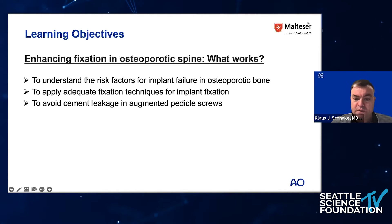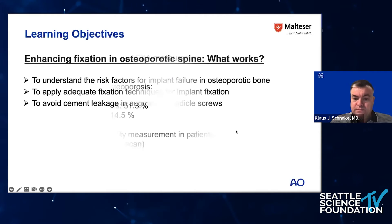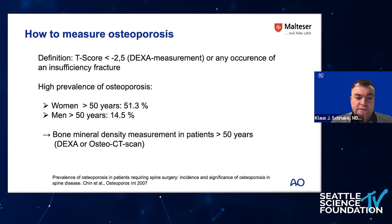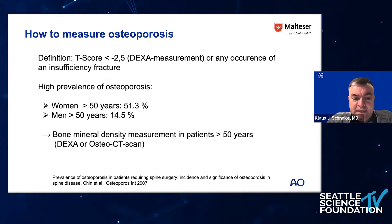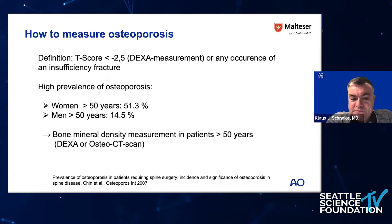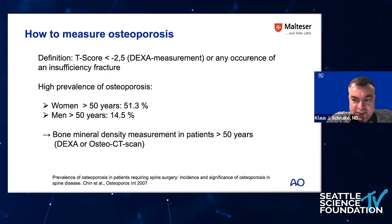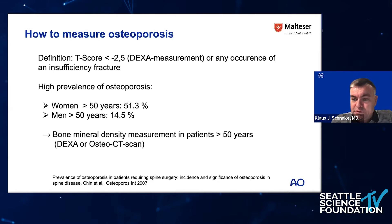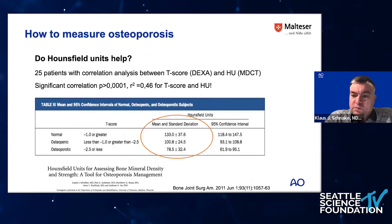We know there is a high prevalence of osteoporosis in women over 50, and it is relatively low in men over 50. However, we advise measuring bone mineral density in patients over 50 years — at least in women, and in men over 65 — if they come in with a fracture, because this may help you decide what to do.